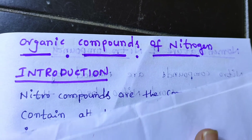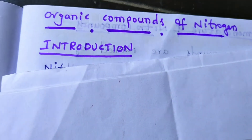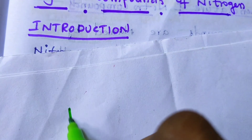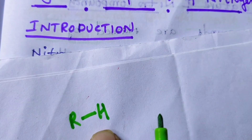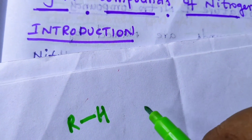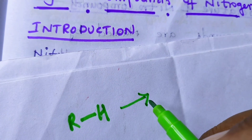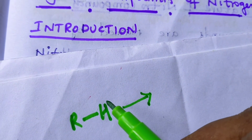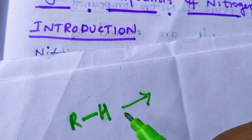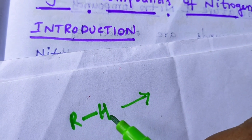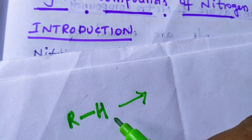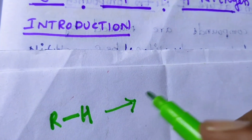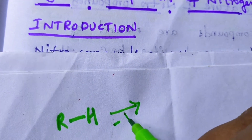So, see here, this is the general formula RH, which is the general formula of the alkane. What I am going to do here is replace one of the hydrogens of the alkane with the nitro group. So, I am going to remove this H.